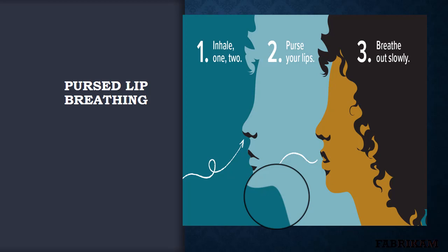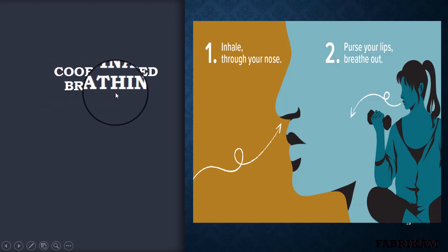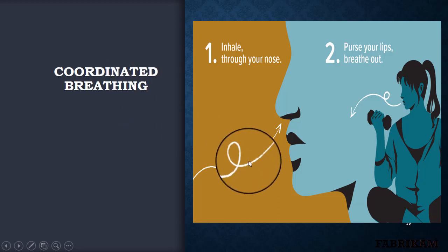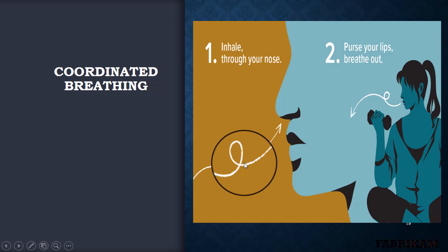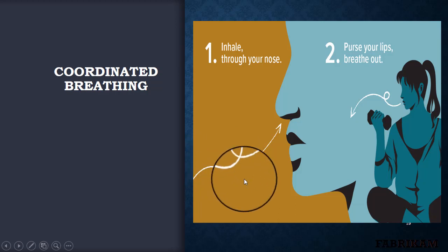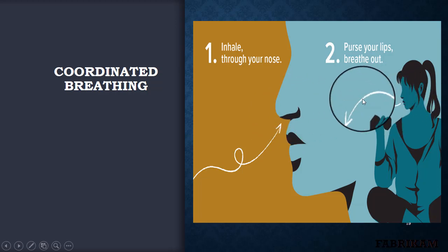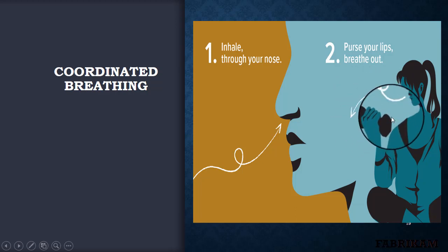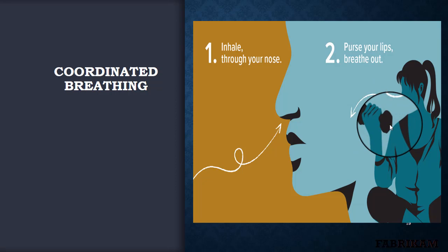The second breathing exercise is coordinated breathing. Feeling shortness of breath can cause anxiety that makes you hold your breath. To prevent this, practice coordinated breathing using these two steps: inhale through your nose before beginning an exercise, then purse your lips and breathe out through your mouth during the most strenuous part of the exercise — for example, when curling upward on a bicep curl. This can be performed when exercising or feeling anxious.